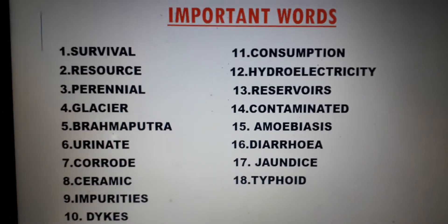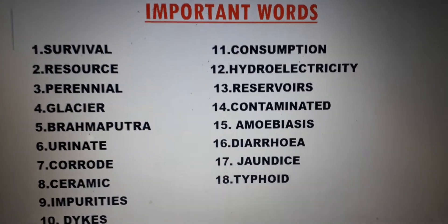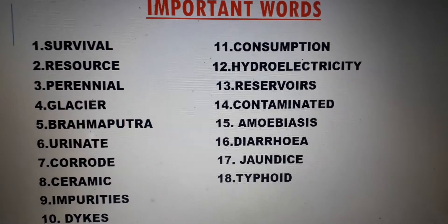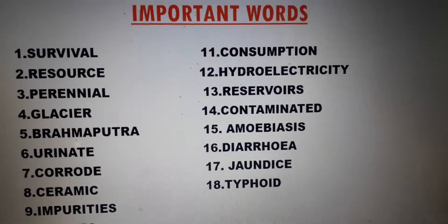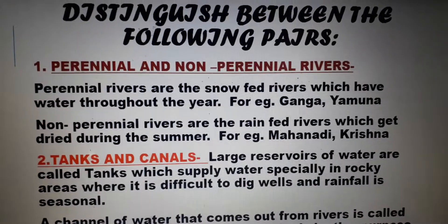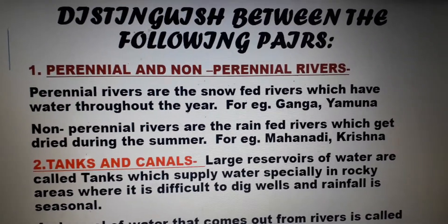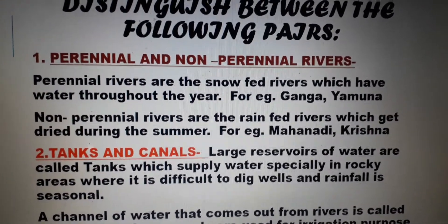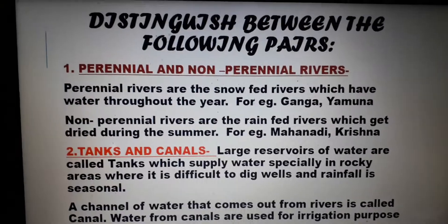Once you finish underlining these words, you will do exercise A and B in your book. After that, you have to do exercise D in your classwork copy. Give today's date and the name of the chapter on top and start doing this exercise.